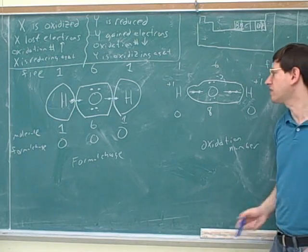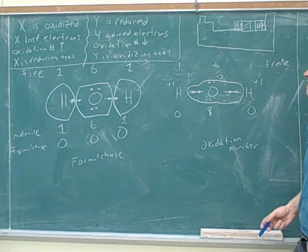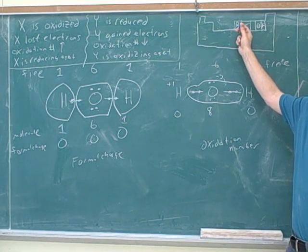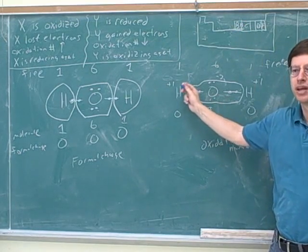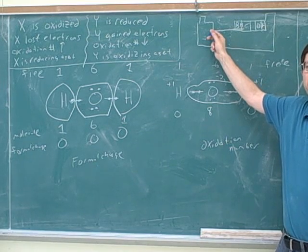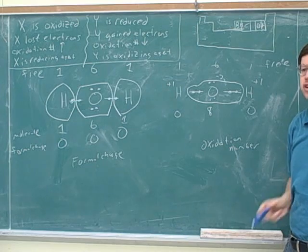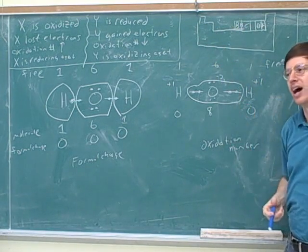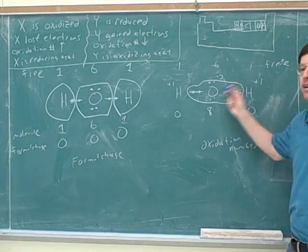Also, a rule is that hydrogen usually has a plus 1 charge, and we can see why, because hydrogen is less electronegative than pretty much all the other nonmetals — it's about the least electronegative of all the nonmetals, so it tends to lose its one electron. On the other hand, if hydrogen is bound to a metal, it would have a negative 1 charge, because hydrogen is more electronegative than the metals.